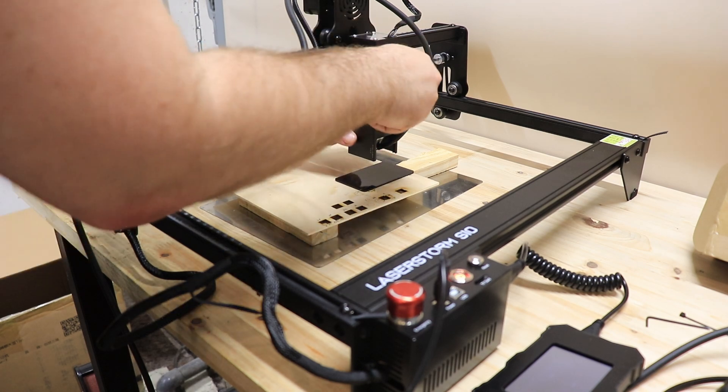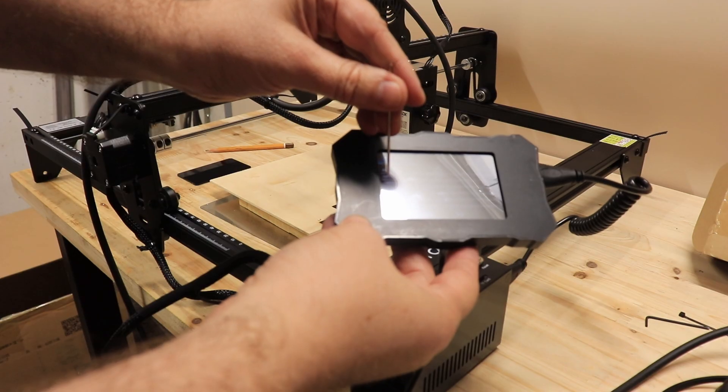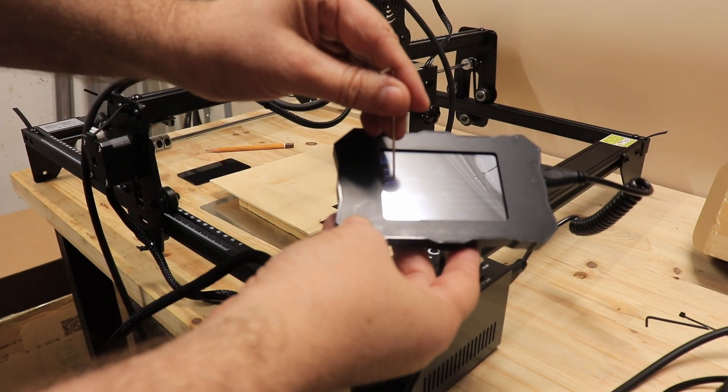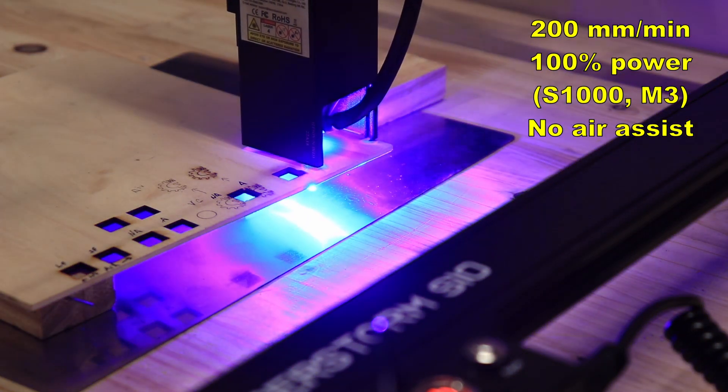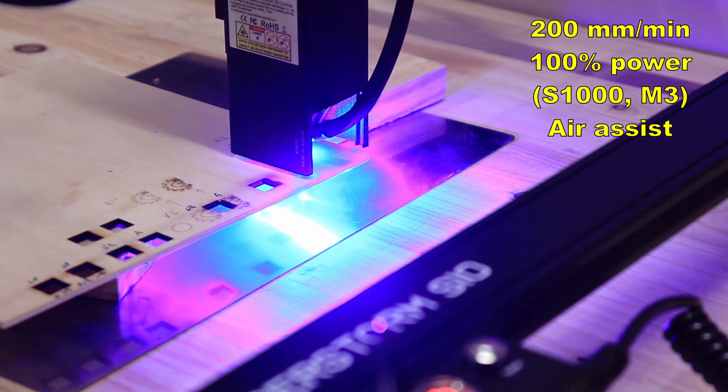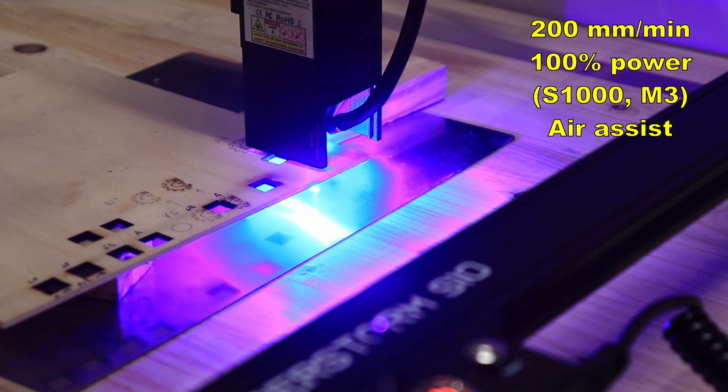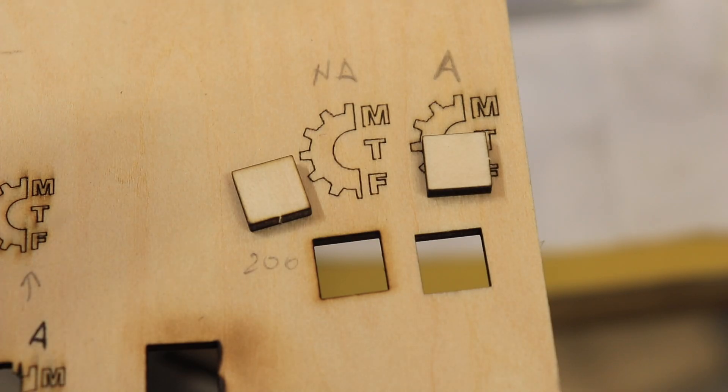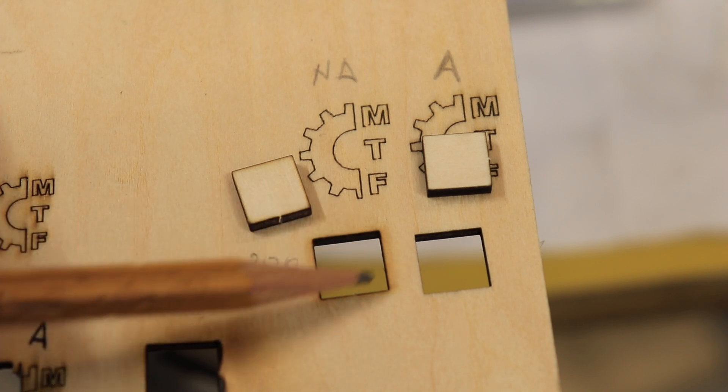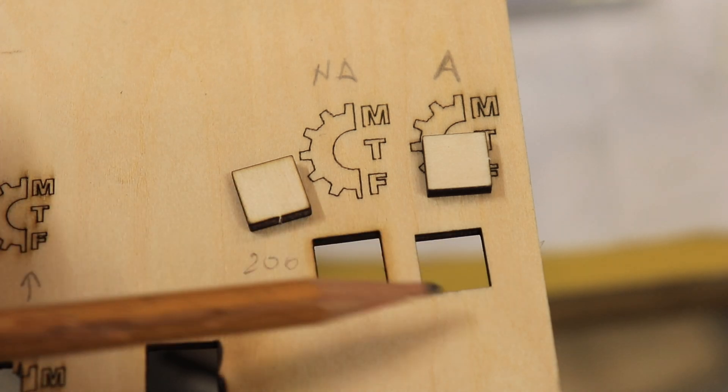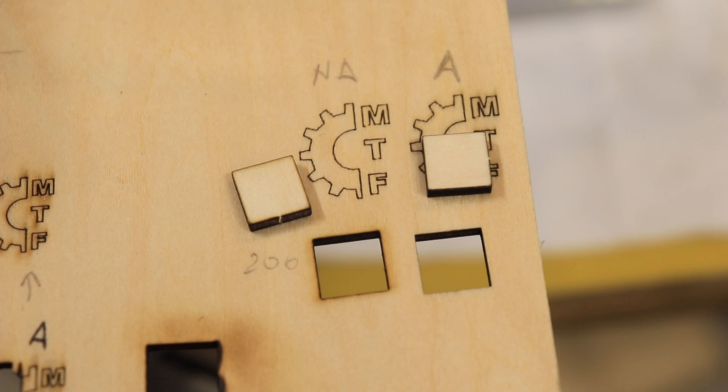Let's set the focus on 200 mm per minute. Well this time definitely I can see the differences. So this was cut without air assist and this with air assist and this is completely clean.